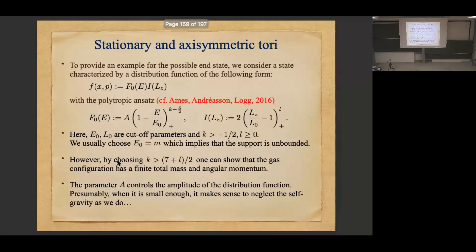That's it for the mixing. Now let me show you four or five slides about the stationary axisymmetric tori we constructed. This is inspired by work Andreas and Locke have been doing, but they took into account self-gravity, which is more sophisticated. In our case, we have the black hole and assume self-gravity can be neglected — gravity is completely dominated by the black hole — so maybe it still makes sense to look at this.